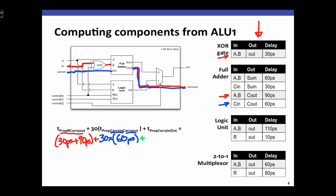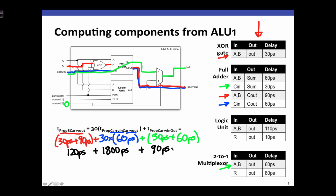Finally, we add one times the propagation delay from carry in to the output. Because we're doing arithmetic, control 2 has the value 0, meaning we're looking at the path through the multiplexer. This path takes the carry in input to the sum output of the full adder for 30 picoseconds, plus the data input to the output path through the multiplexer for another 60 picoseconds. Summing all these components gives a total of 2,010 picoseconds.